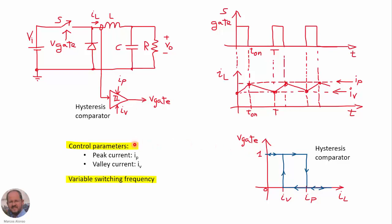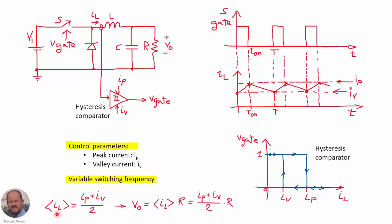This way we operate the converter under hysteretic control. We have only two control parameters: the peak current and the valley current. We are not defining the T-on time or the switching period, so this is a variable switching frequency operation. The duty cycle is also variable — we are not controlling the duty cycle. The only parameters are the peak current IP and the valley current IV. With this, the average current through the inductor is IP plus IV divided by 2, and the output voltage equals that average times the load resistance.